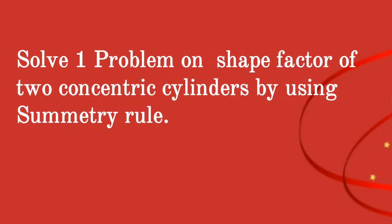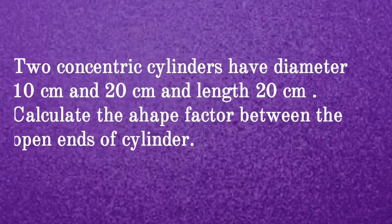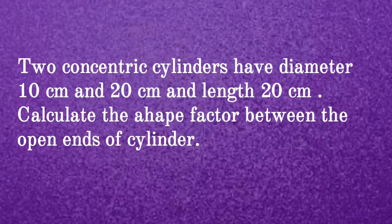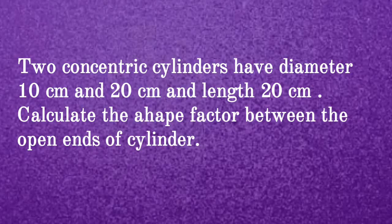We will solve a problem on shape factor of two concentric cylinders using the symmetry rule. Two concentric cylinders have diameters 10 cm and 20 cm and a length of 20 cm. We need to calculate the shape factor between the open ends of the cylinder.